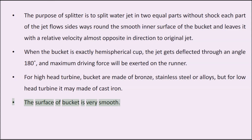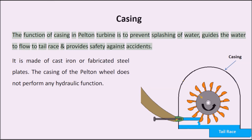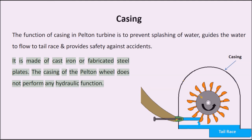The function of the casing in the Pelton turbine is to prevent splashing of water, guide the water to flow to the tail race, and provide safety against accidents. It is made of cast iron or fabricated steel plates. The casing of the Pelton wheel does not perform any hydraulic function.